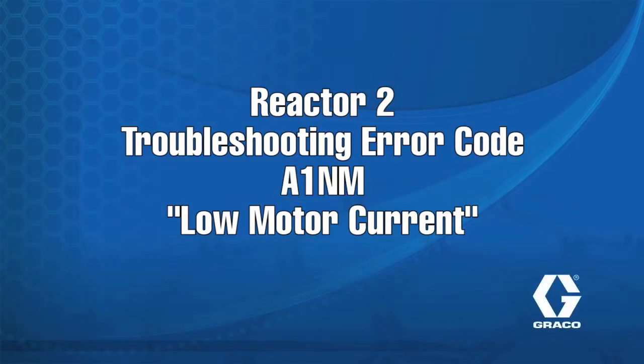Troubleshooting for Reactor 2 Error Code A1NM, Low Motor Current.